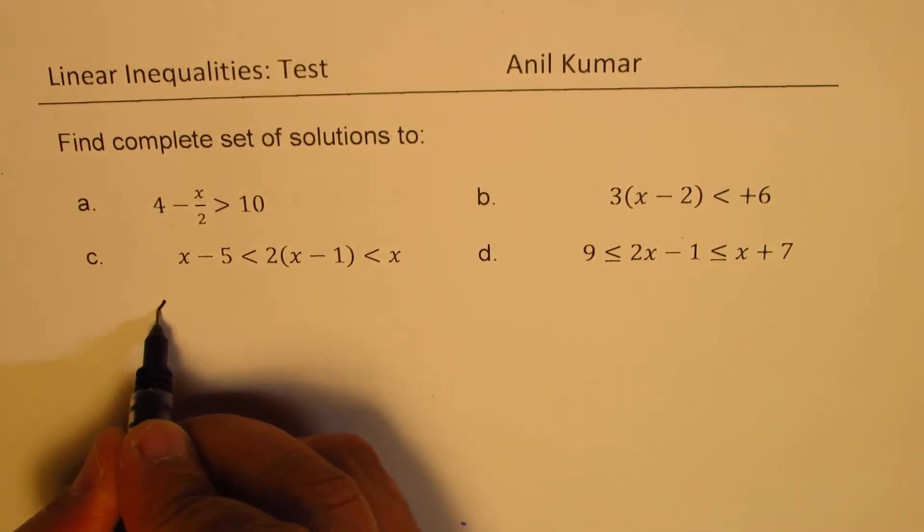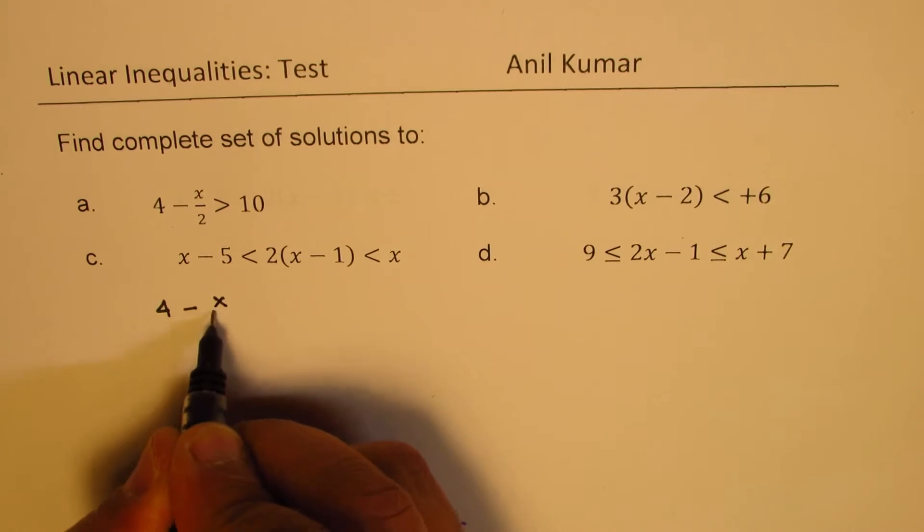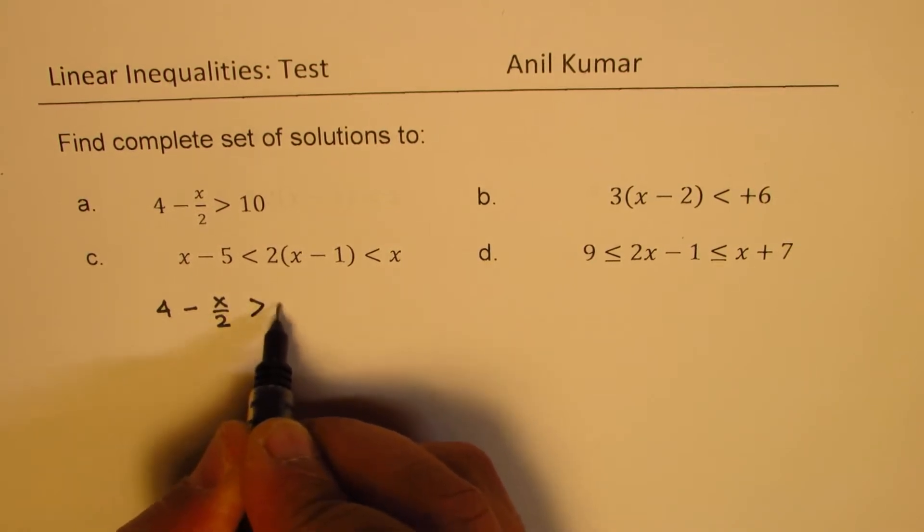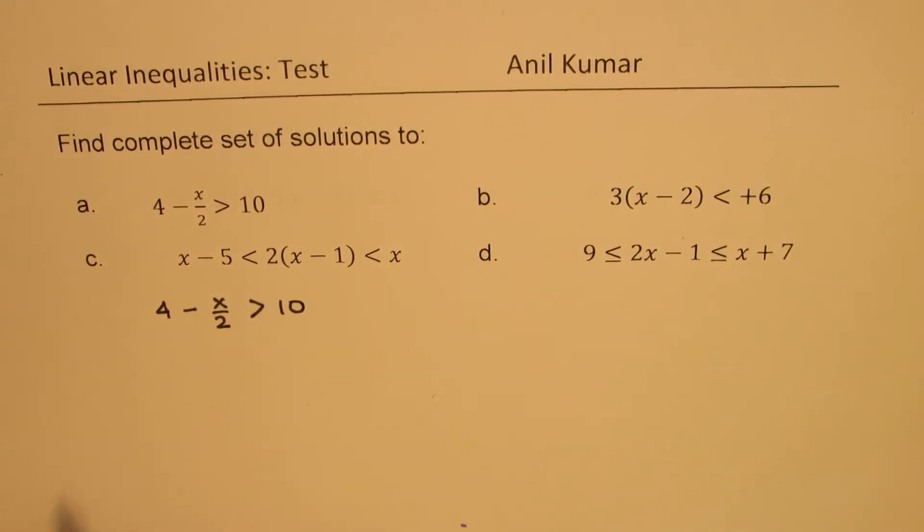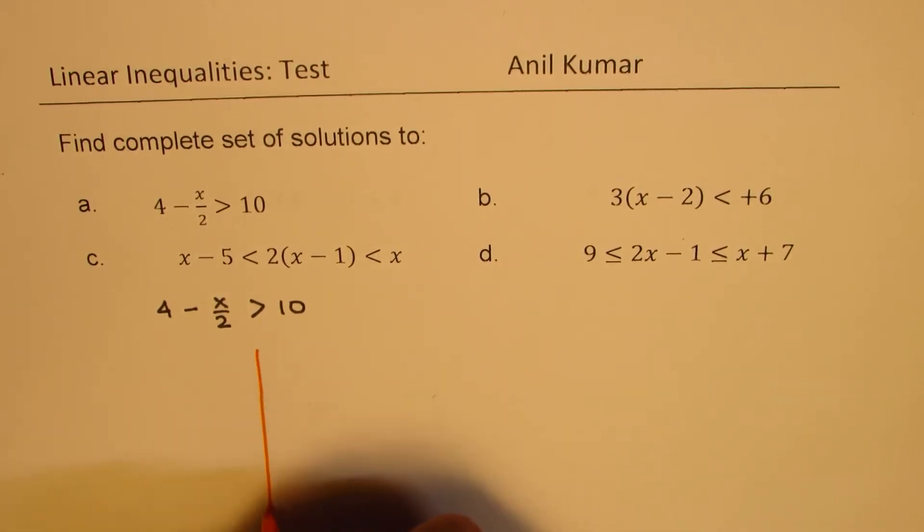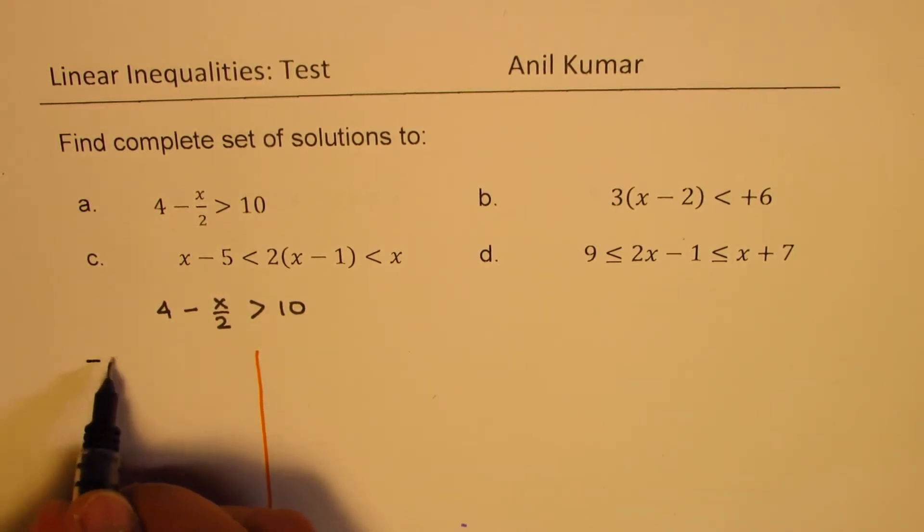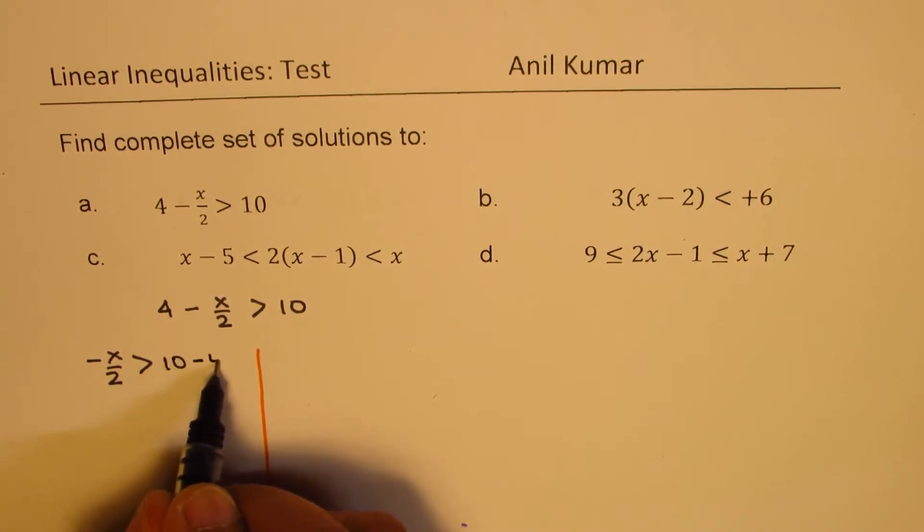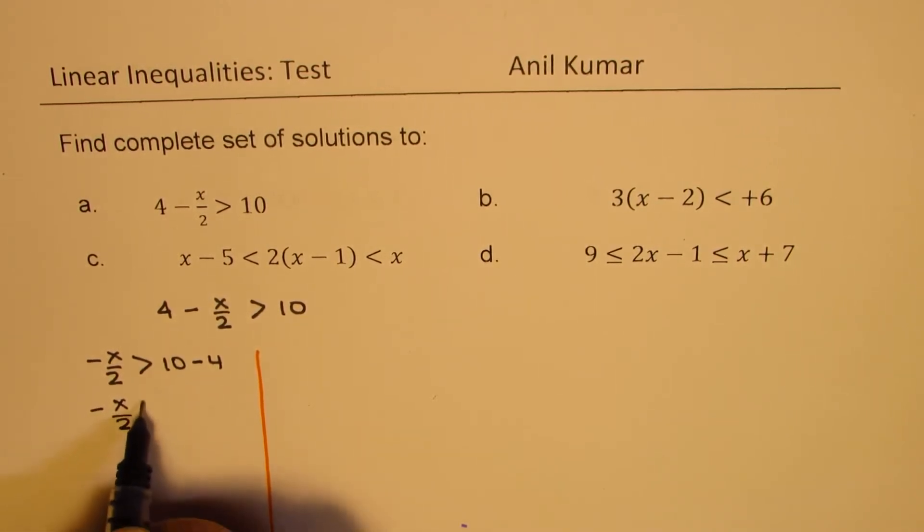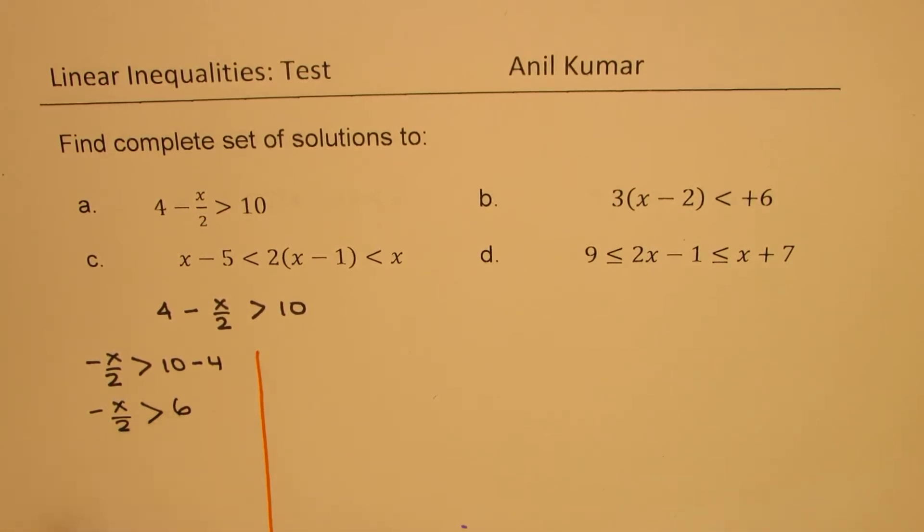Let's begin with the very first one which is 4 minus x over 2 should be greater than 10. Now I'll show you two different ways of doing this. So one way is we can take 4 on this side so it becomes minus x over 2 should be greater than 10 minus 4, which is minus x over 2 should be greater than 6. And now you can multiply by minus 2.